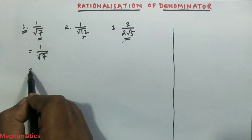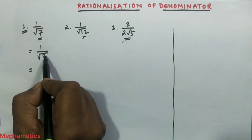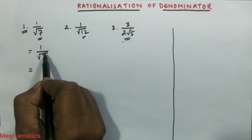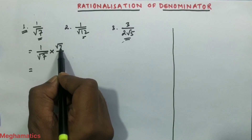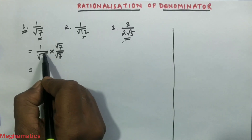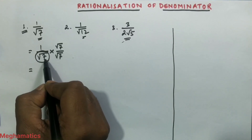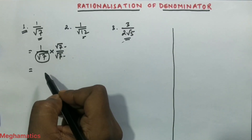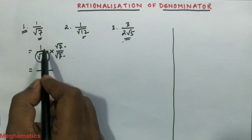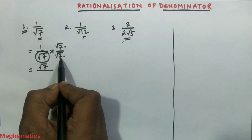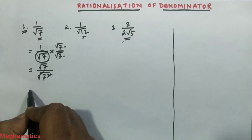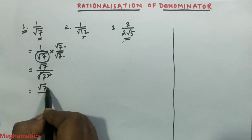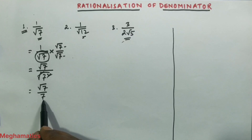So we need to start rationalizing. If the denominator is root over 7 and there is only one term, we multiply the same root over 7 in both the numerator and denominator. Root over 7 into 1 is root over 7, and root over 7 into root over 7 gives root over 7 squared. The square and root cancel, giving root over 7 by 7. There is now no root in the denominator, so it is rationalized.